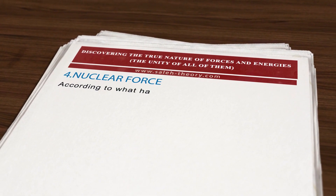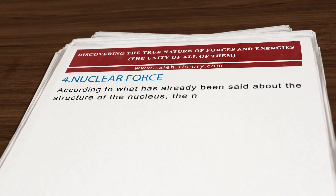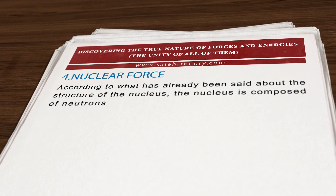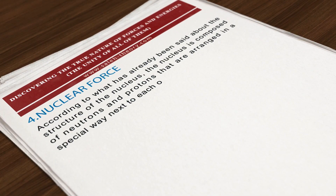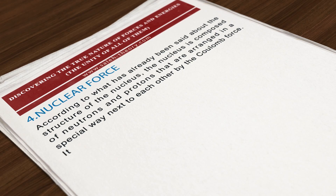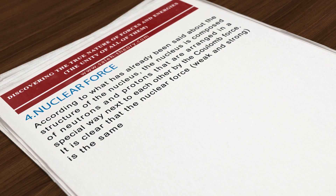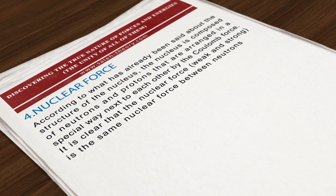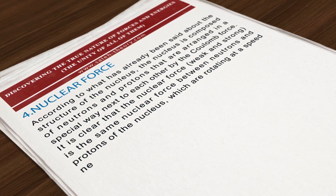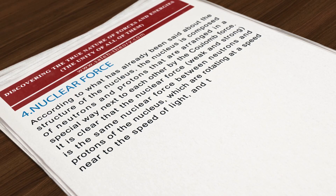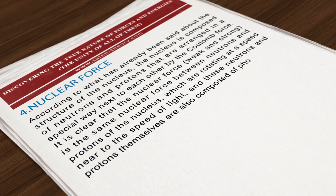Nuclear Force: According to what has been said about the structure of the nucleus, the nucleus is composed of neutrons and protons arranged next to each other by the Coulomb force. The nuclear force — both weak and strong — is the force between neutrons and protons of the nucleus, which rotate at a speed near the speed of light. These neutrons and protons are themselves also composed of photons.